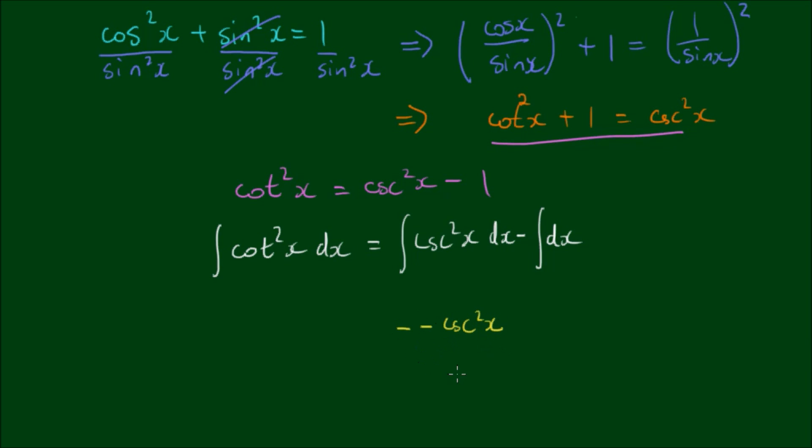So what if I were to rewrite the positive cosecant squared of x as a double negative? Alright, so a double negative is equal to a positive. And I take one of the negatives outside of the integral and leave the rest of the equation as it is.